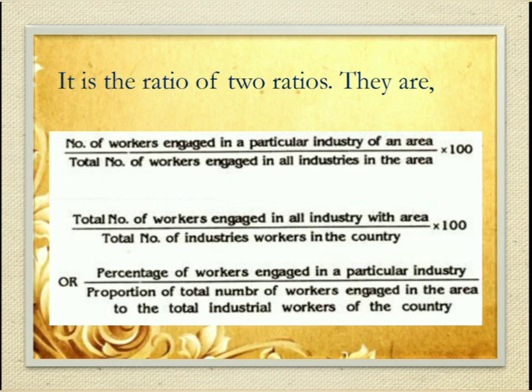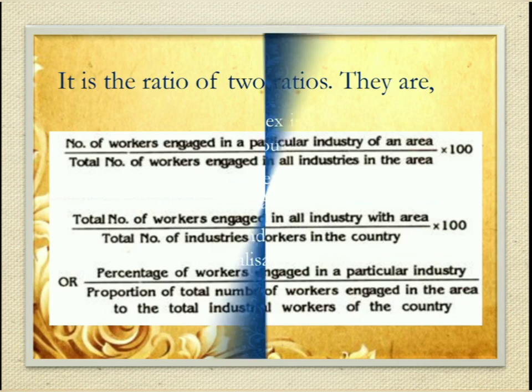The ratio is: number of workers engaged in a particular industry of an area divided by total number of workers engaged in all industries in the area, multiplied by 100; divided by total number of workers engaged in all industries in the area divided by total number of workers engaged in all industries in the country, multiplied by 100. Or equivalently: the percentage of workers engaged in a particular industry divided by the proportion of total number of workers in the area to the total industrial workers of the country.